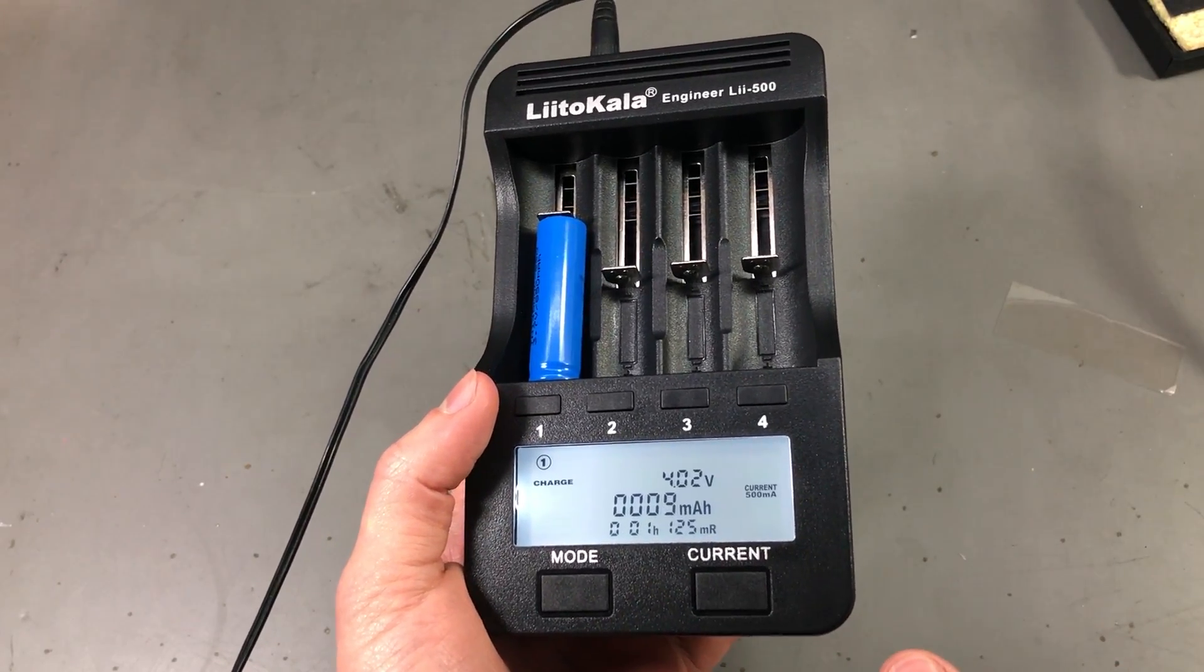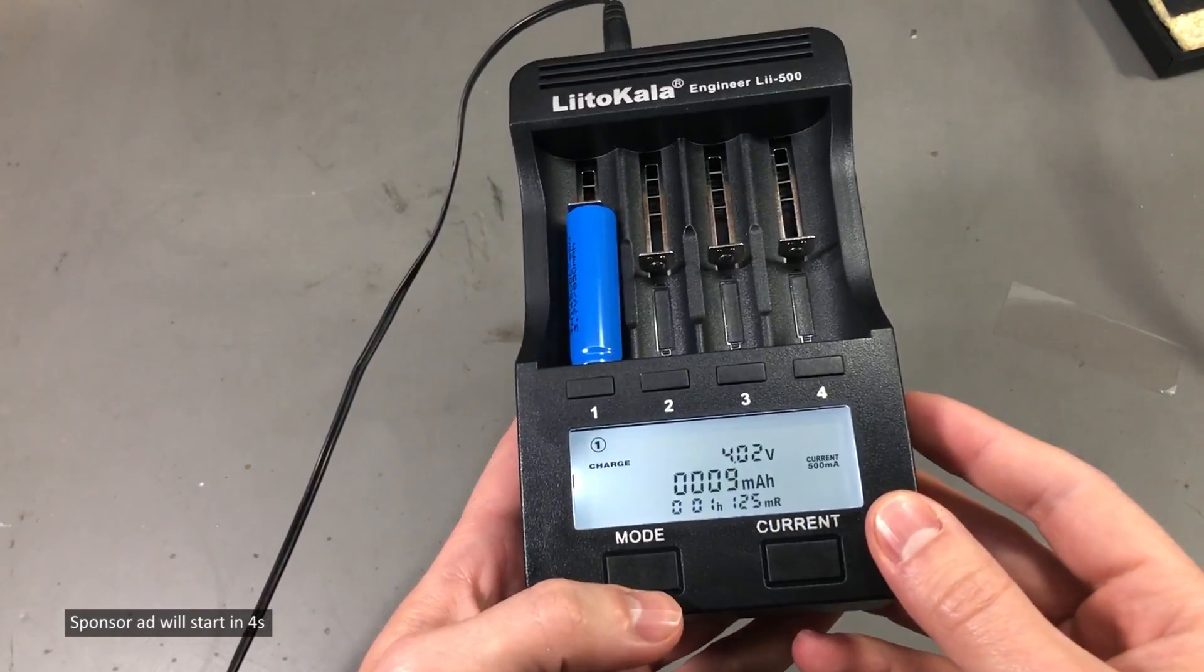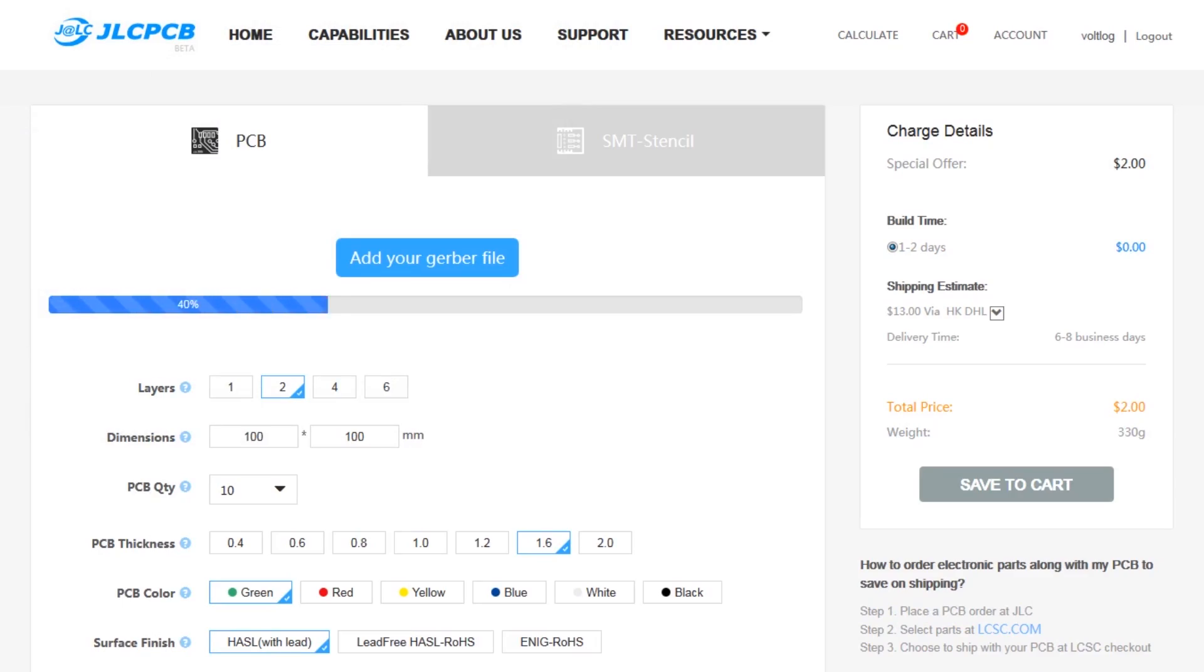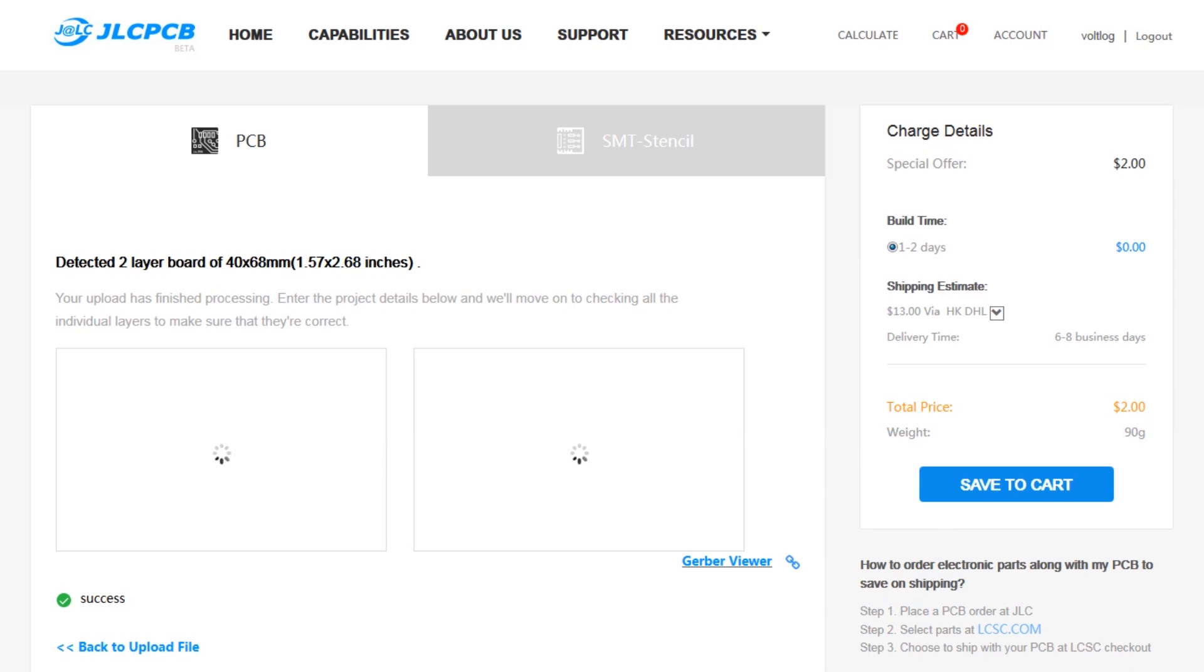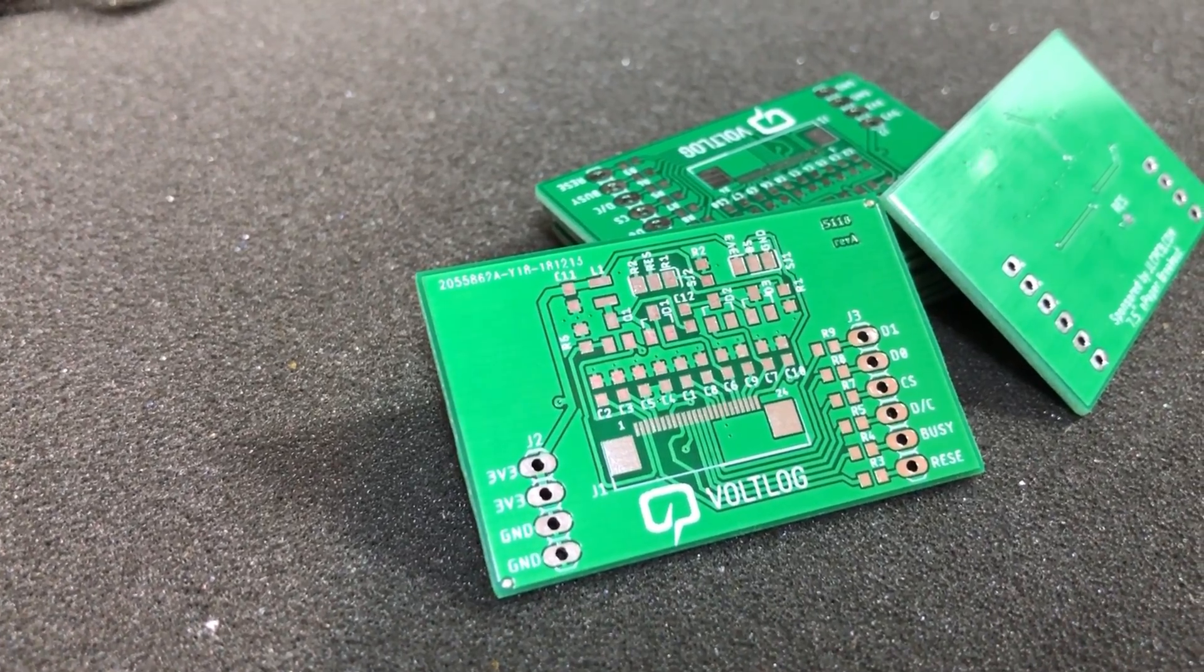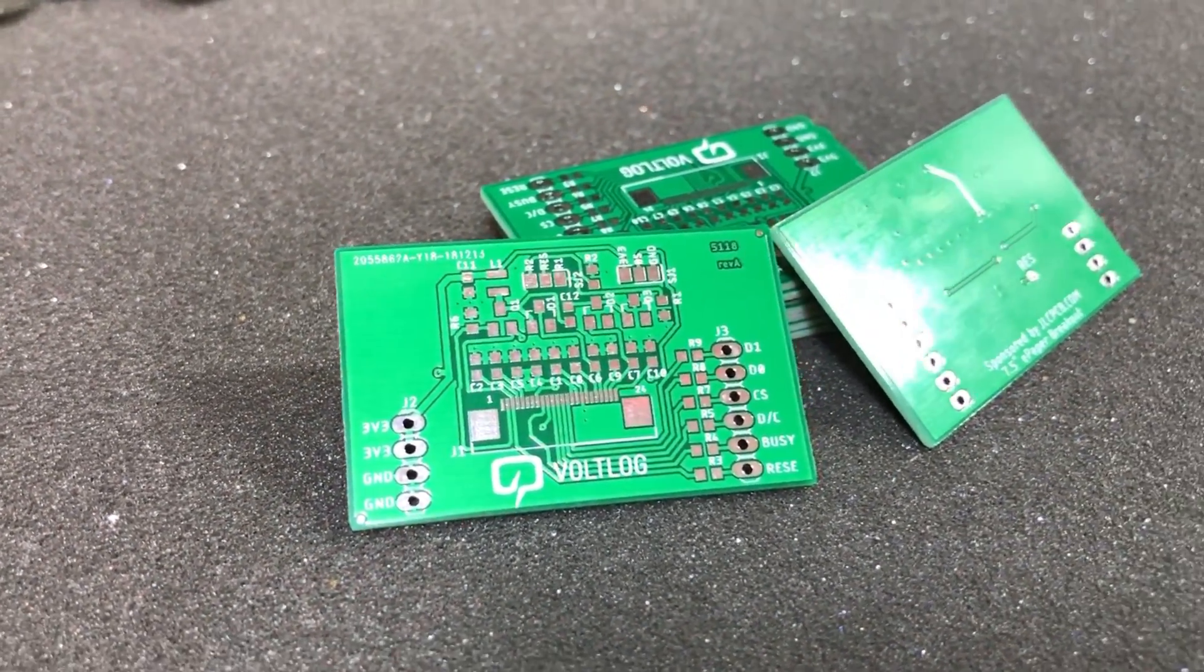This video is sponsored by JLCPCB.com who in the past months upgraded their manufacturing line so they are now offering 24 hours turnaround time for prototype PCBs for the same price of just $2. Prototyping is now faster and cheaper than any other place so it's definitely worth checking them out.